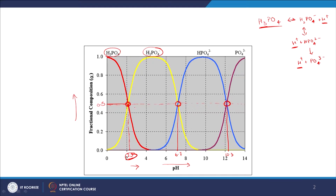If someone asks how you can tell if an acid is strong or weak, you look at the pKa value. For this triprotic system we have 3 pKa values, and at each pKa value the relevant protonated and deprotonated forms are equal in concentration. This is the speciation diagram, and the same holds at pKa3 for HPO4²⁻ and PO4³⁻.